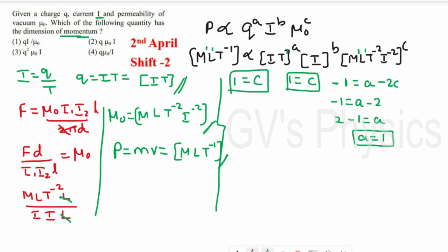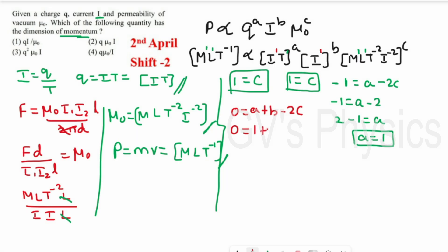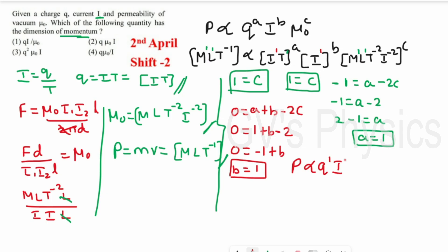Substituting a = 1, b = 1, c = 1 back: momentum ∝ q¹ · i¹ · μ₀¹. So momentum is proportional to q·μ₀·i. Checking the options, Option 2 is the right answer.